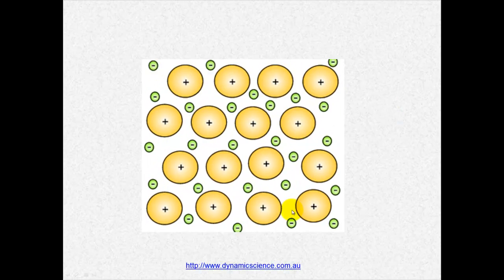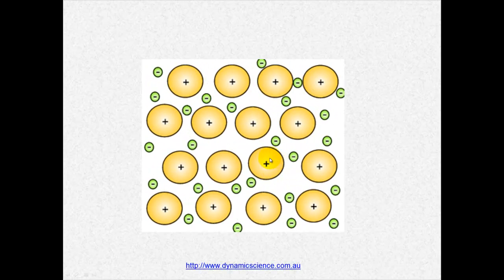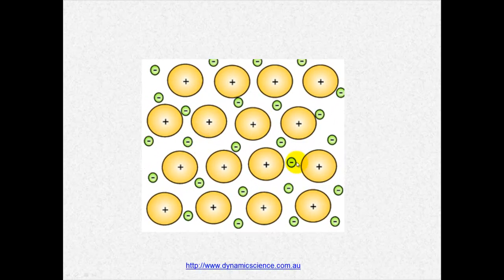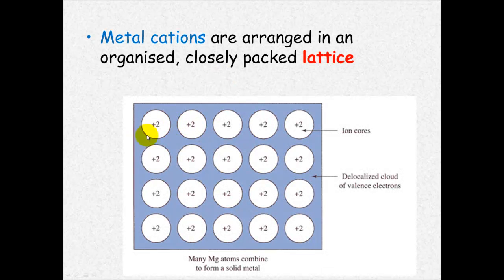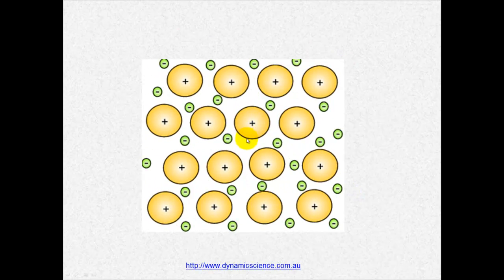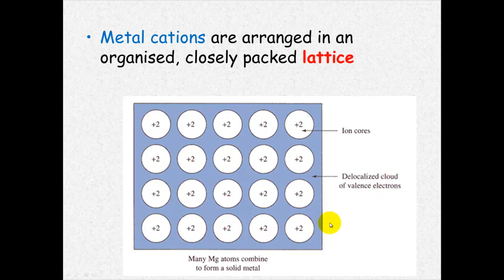So it looks something like this, this is a version of it moving because remember everything's got kinetic energy, so these particles or the cations will be vibrating and the electrons will be whizzing around in between. These metal cations are arranged in an organized and closely packed lattice. It's represented here as a cloud of valence electrons because electrons are whizzing around so fast that they form a cloud effect, and that's Schrodinger's waves or cloud effect.